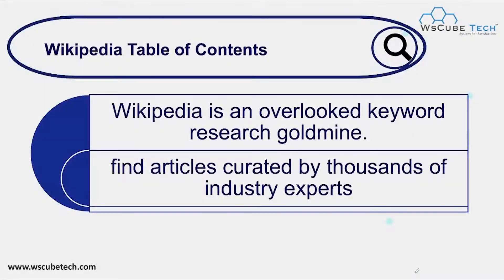After creating the list of topics, you have to check your keyword ideas in the Wikipedia table of contents. Wikipedia is an overlooked keyword research gold mine — its articles are curated by thousands of industry experts, so from there you can get great ideas about your keywords.